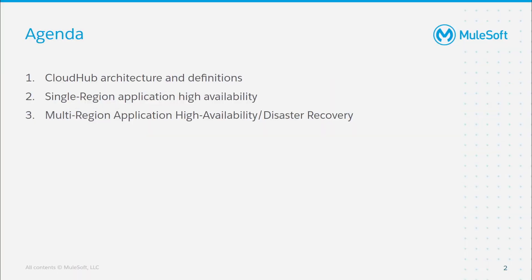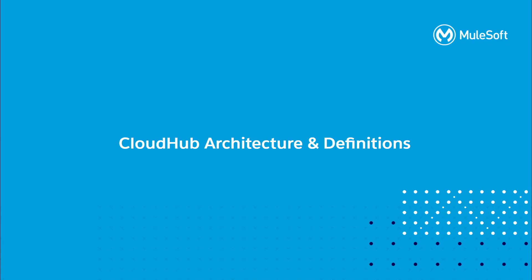In today's presentation, we will discuss CloudHub architecture and definitions, single-region application high availability, multi-region application high availability and disaster recovery, and then follow up with some next steps you can take to learn more. Before we get started talking about the specific capabilities MuleSoft provides, it's important that we level set on some terminology to ensure we're speaking the same language.